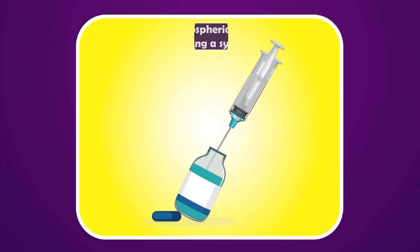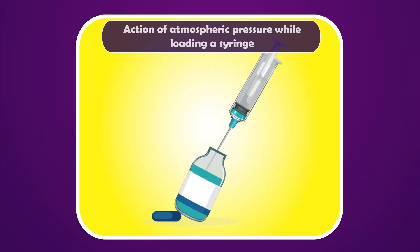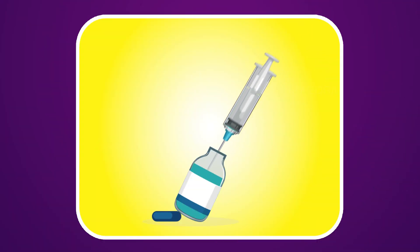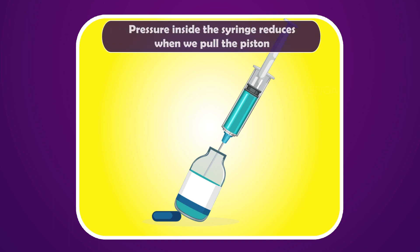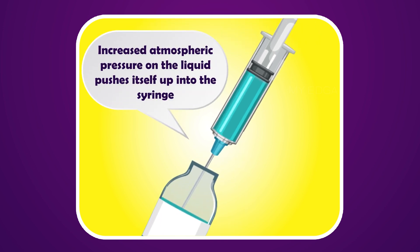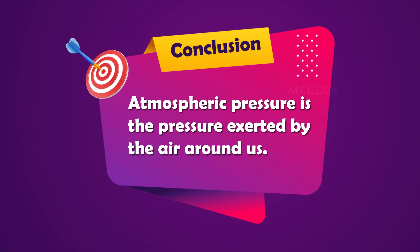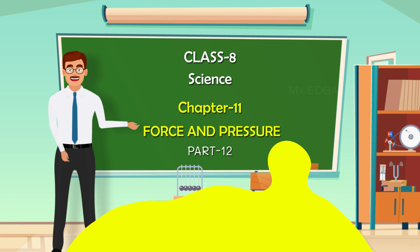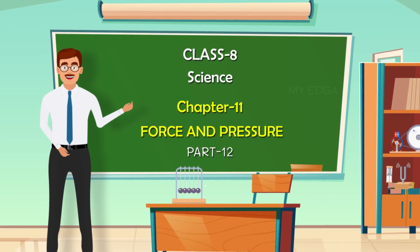Can you explain the action of atmospheric pressure while loading a syringe? When we pull the piston after placing the syringe in the liquid, the pressure inside the syringe reduces. Now the increased atmospheric pressure on the liquid pushes it up into the syringe and it gets loaded. So, let us conclude that atmospheric pressure is the pressure exerted by the air around us, and we can experience the effect of this pressure in various life situations. By this, we have come to the end of this chapter.